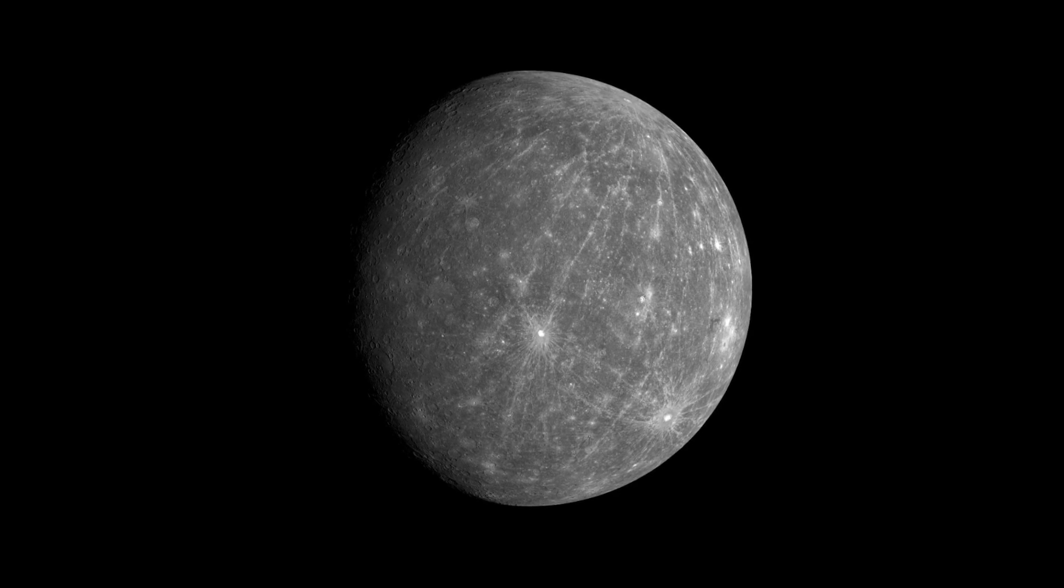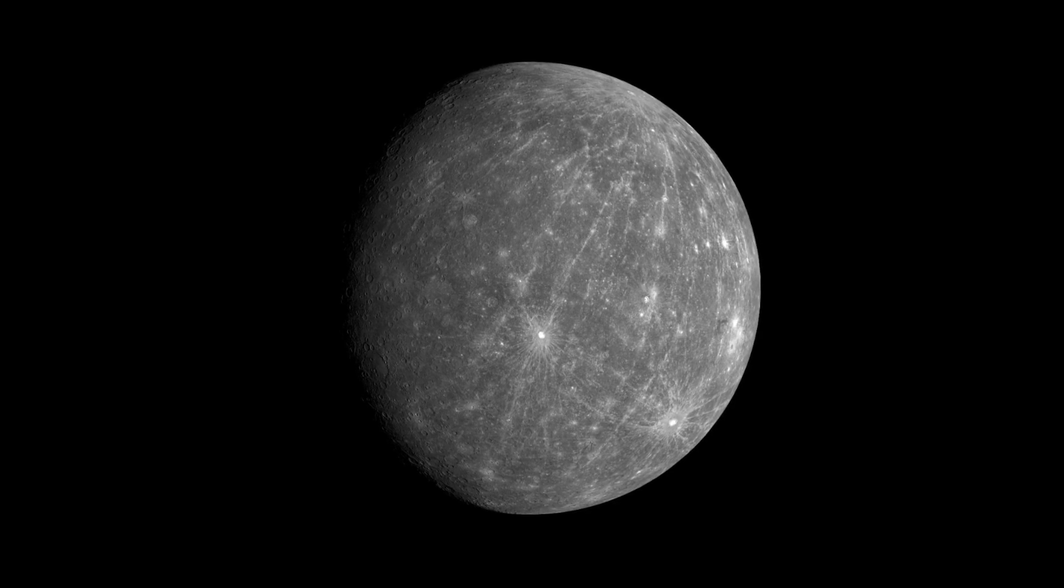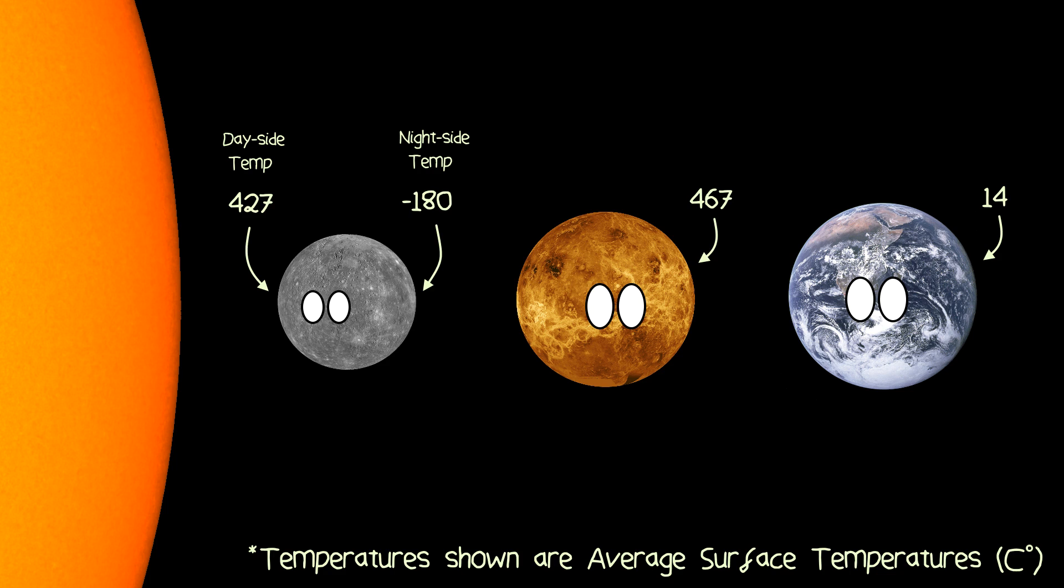This is Mercury, it's the smallest planet in our solar system, and it's also the closest to the sun. Oddly though, it's not the hottest planet, that title goes to Venus.